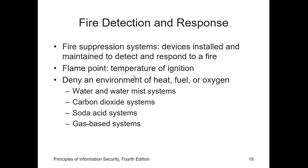Fire suppression systems are devices installed and maintained to detect and respond to a fire, potential fire or combustion situation. These devices typically work to deny an environment of one of the three requirements for fire to burn: temperature, fuel and oxygen. Water and water mist systems reduce the temperature of the flame to extinguish the fire and to saturate some categories of fuels to prevent ignition. Carbon dioxide systems rob fire of its oxygen. The soda acid systems deny fire its fuel by preventing spreading. The gas-based systems disrupt the fire's chemical reaction but leave enough oxygen for people to survive for a short time.